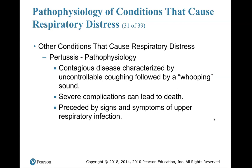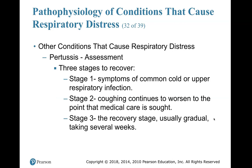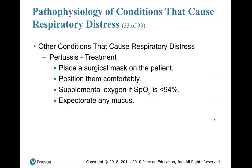Pertussis pathophysiology: a contagious disease characterized by uncontrollable coughing followed by a whooping sound. Severe complications can lead to death. It is preceded by signs and symptoms of upper respiratory infection. Assessment in three stages: Stage one — symptoms of common cold or upper respiratory infection. Stage two — coughing continues to worsen to the point that medical care is sought. Stage three — recovery, usually gradual and takes several weeks. Treatment: place a surgical mask on the patient because they have an infection. Position them comfortably, supplemental oxygen if SpO2 is less than 94%, and be prepared for them to expectorate mucus — wear a mask and face shield.